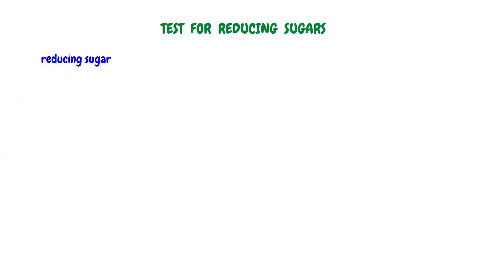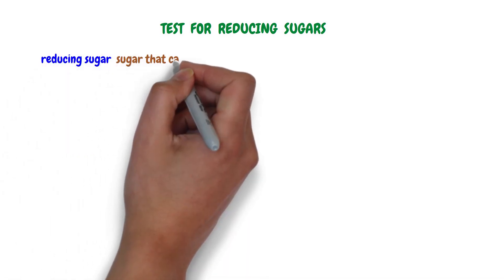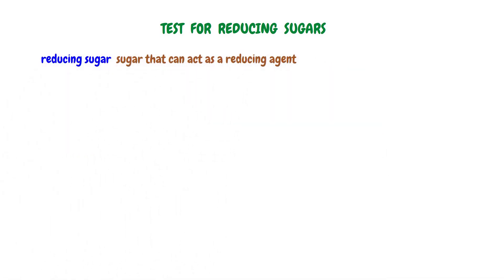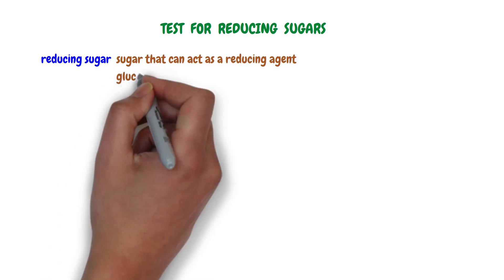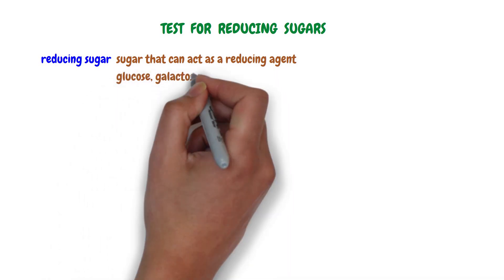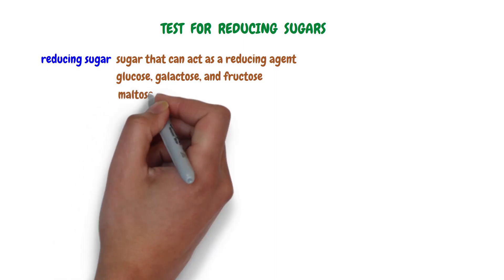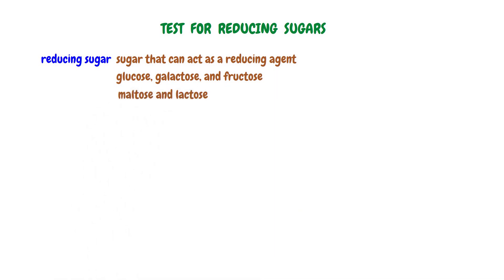A reducing sugar is a sugar that can act as a reducing agent. All monosaccharides such as glucose, galactose, and fructose are reducing sugars. Most disaccharides such as maltose and lactose are reducing sugars. Sucrose, a disaccharide, and all polysaccharides are not reducing sugars.